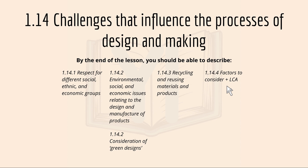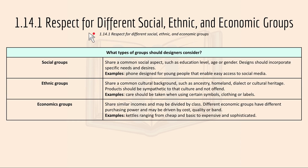Moving on to 1.14.1: respect for different social, ethnic and economic groups. Here's what type of groups designers should consider. The first one is social groups — they share a common social aspect such as education level, age or gender, and designs should incorporate specific needs and desires. For example, form design for young people that enables easy access to social media.